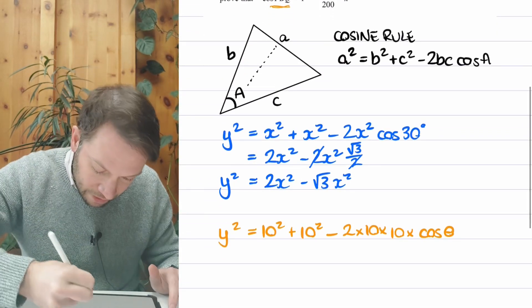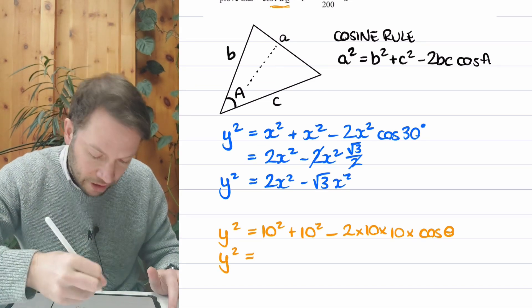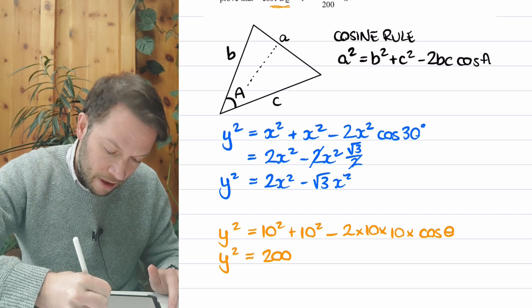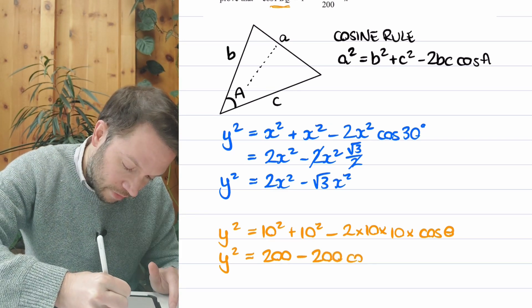So 2 times 10 times 10 multiplied by the cos of the angle. Well, the angle A we've made theta, so it's going to be cos of theta. And again, let's just simplify this. So we get Y squared equal to 100 plus 100, that's 200 minus 2 times 10 times 10 is 200 again, cos of theta.